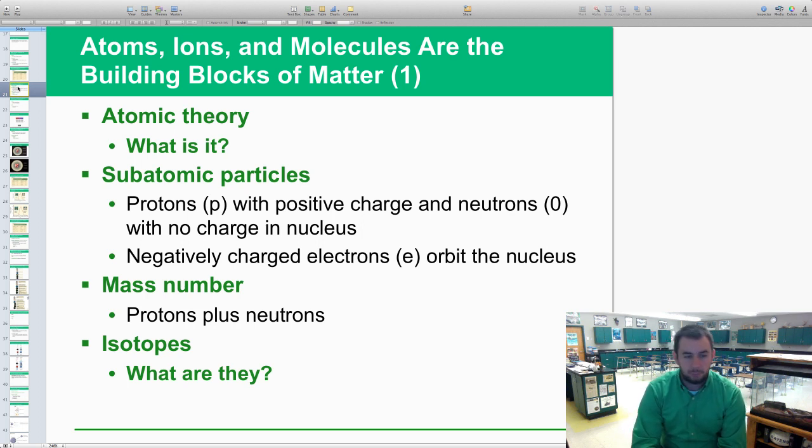Mass number is the protons plus the neutrons. And isotope—what is that? Hopefully you remember this from back in the day in chemistry. Isotopes have the same atomic number, elements that have the same atomic number, but they differ in mass numbers. Usually, specifically, they differ in the number of neutrons. So our three basic ones are carbon-12, carbon-13, carbon-14. As we get higher in those numbers, they're adding one more neutron into that nucleus. That's what an isotope is overall.